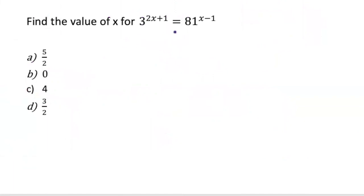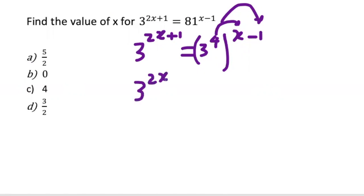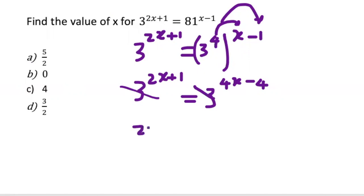The next example requires rewriting in the same base. Eighty-one equals three to the fourth, so I rewrite 81 as three to the fourth, then raise it to the power (X minus one), putting that in brackets. Multiplying through: four times X gives four X, and four times negative one gives negative four, so the left side becomes three to the power (four X minus four). The right side is three to the power (two X plus one).